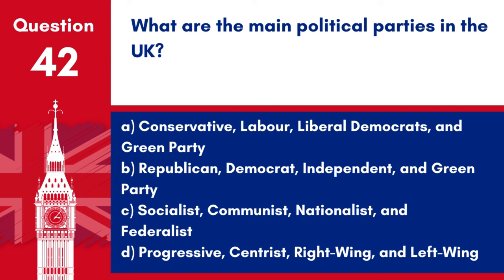Question 42. What are the main political parties in the UK? A. Conservative, Labour, Liberal Democrats, and Green Party. B. Republican, Democrat, Independent, and Green Party. C. Socialist, Communist, Nationalist, and Federalist. D. Progressive, Centrist, Right-Wing, and Left-Wing. Answer: A. Conservative, Labour, Liberal Democrats, and Green Party. The main political parties in the UK include the Conservative Party, Labour Party, Liberal Democrats, and Green Party.